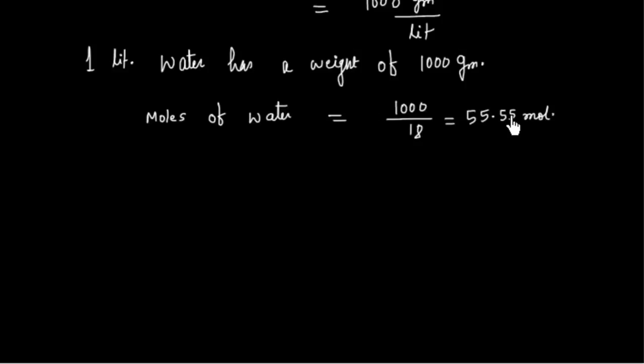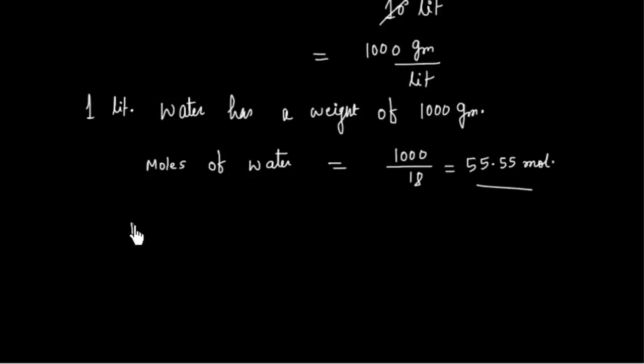So this means 1 liter of water will contain this amount of moles of water. So now molarity is defined as number of moles per liter. So molarity will be number of moles, and the volume is already 1 liter. So molarity is 55.55 M.